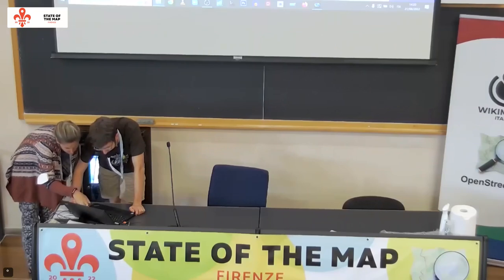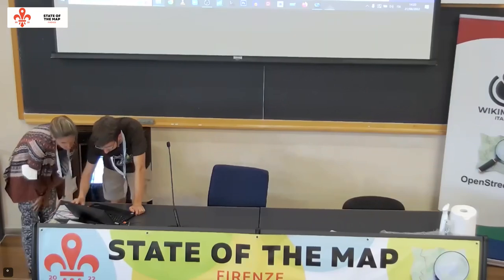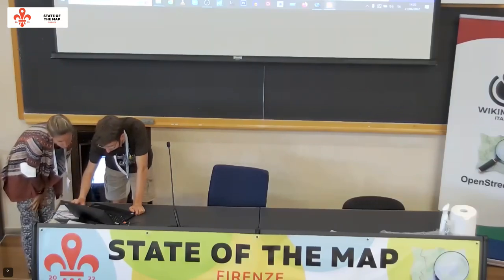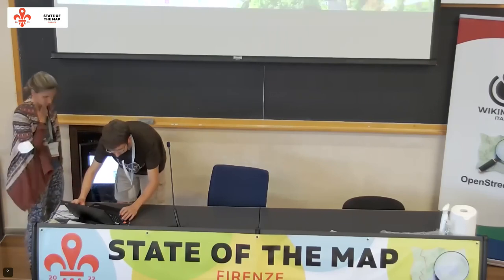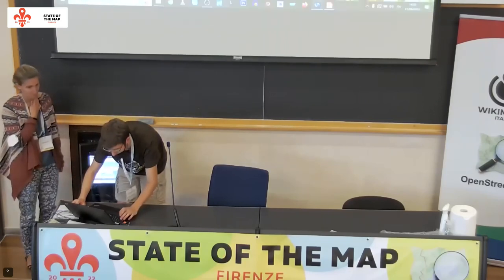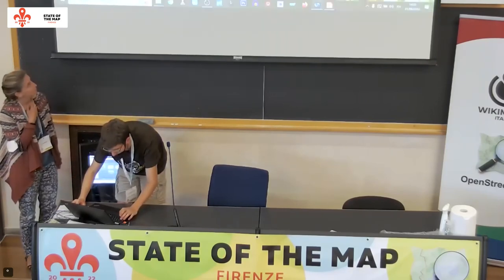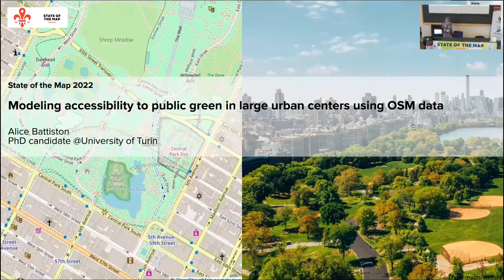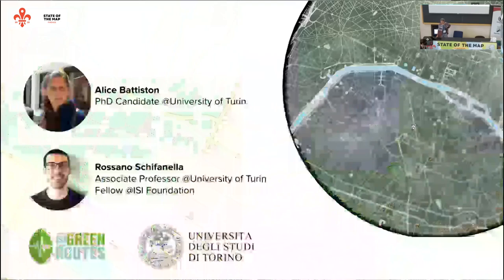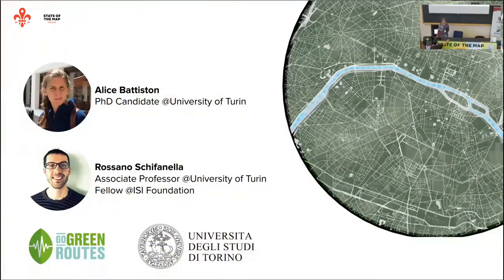Next we have Alice Battistone from Turin University. I'm Alice Battistone, PhD candidate at the University of Turin, and today I'm going to talk about modeling accessibility to public green using OSM data. This is very much an ongoing project with my PhD supervisors, so all comments are very welcome.